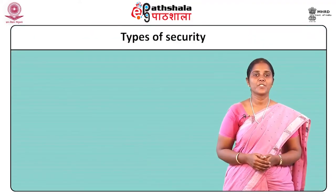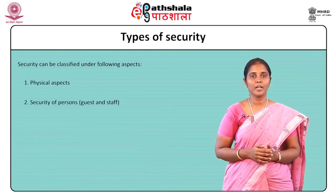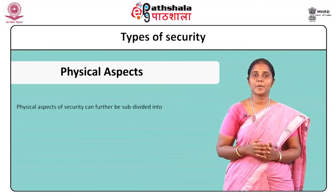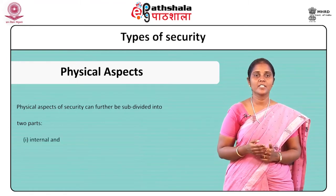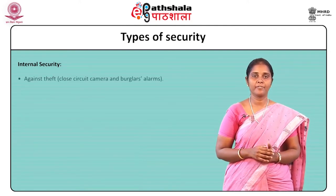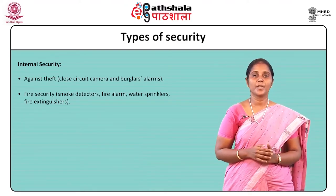How do we prevent all these threats? It is by a good security system. Security can be classified as security of physical aspects, security of people, and security of systems. Security of physical aspects is further divided into internal and external security. Internal security includes security against theft using closed-circuit cameras and burglar alarms, fire security by smoke detectors, fire alarms, water sprinklers, and fire extinguishers, proper lighting of corridors, fire escape areas, basements, and other areas.